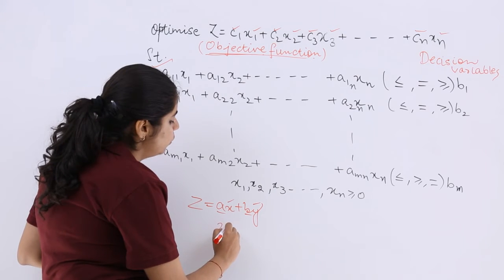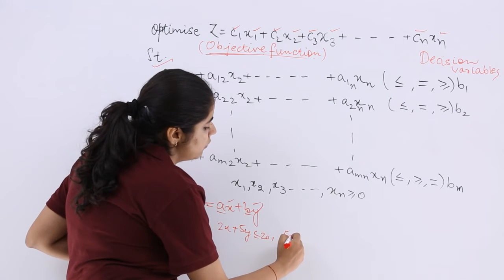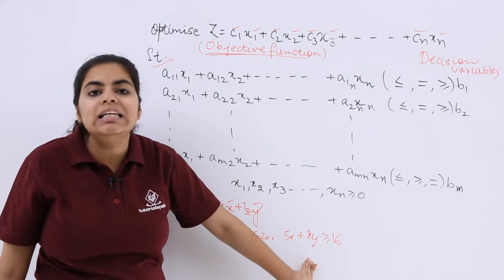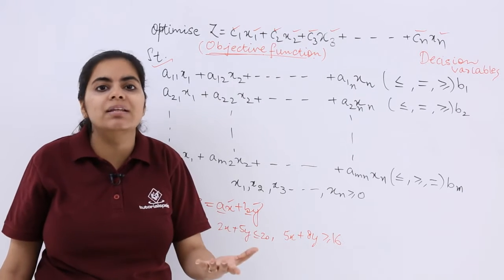Like I say, I have 2x plus 5y less than or equal to 20, I have 5x plus 8y greater than or equal to 16. These all are linear inequalities and these are the conditions which can be there in the problems.